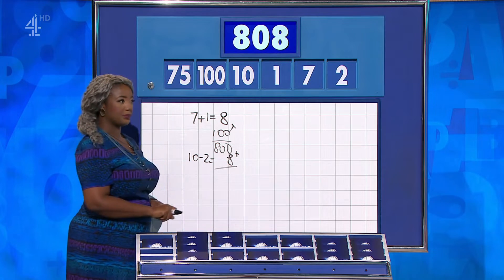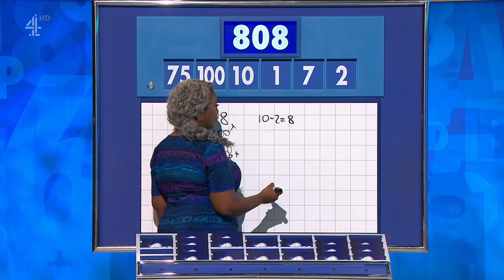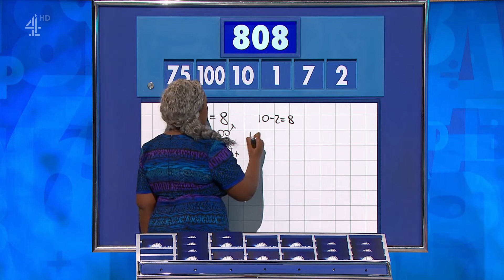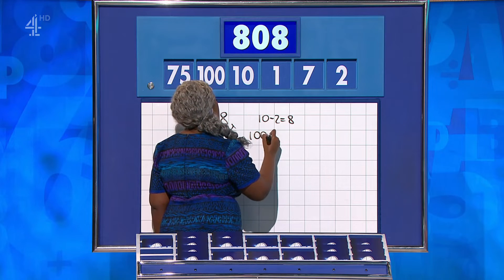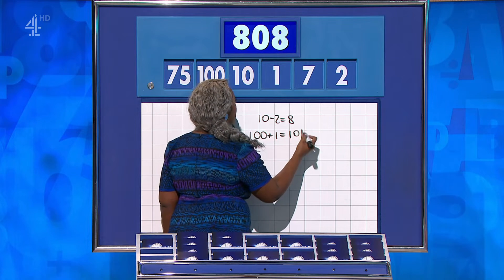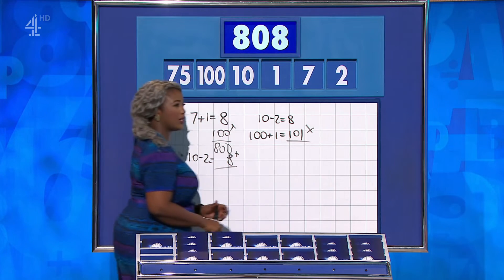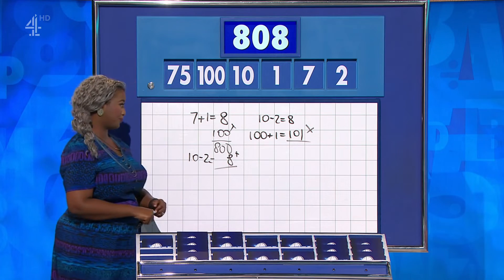Dan? 10 minus 2 is 8. 100 plus 1 is 101. And multiply them together for 808. Well done.